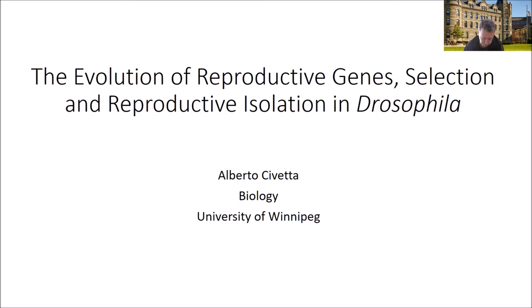The talk today has basically three main themes. I would like to start by stating that it's a well-established observation that reproductive traits and genes on average show a pattern of rapid evolution, and particularly rapid divergence between species. Because of that observation, the question that followed is what drives that divergence — whether selection has been an engine driving that rapid evolution. I'm going to show you some results we have produced and published about the evolution of the coding portion of the gene for seminal fluid proteins. Then I'm going to move into some work we're starting on regulation and divergence in expression of these seminal fluid proteins. The central question for us is whether the rapid evolution of these genes contributes in some way to reproductive isolation between species — basically a question about the genetic basis of speciation.